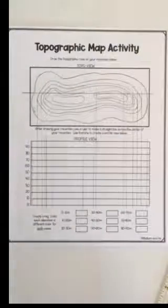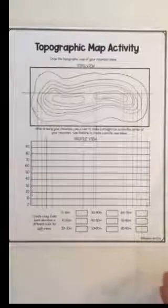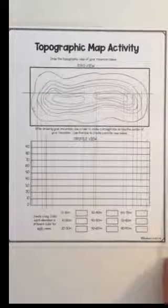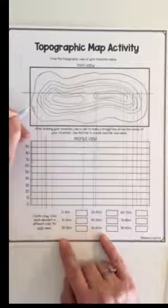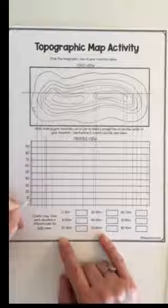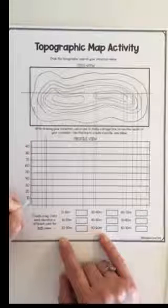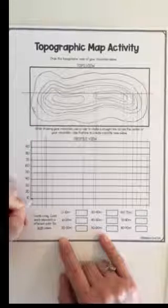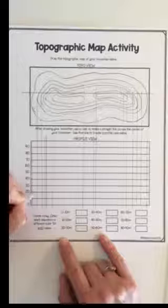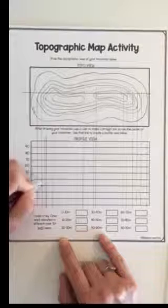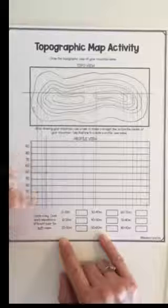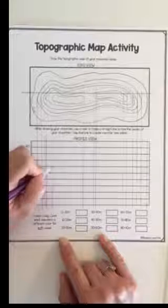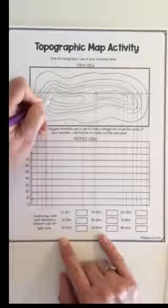Now that we've drawn our perpendicular lines I'm going to show you how to plot the profile view. So let's say that our first contour line is 10 meters. Where this perpendicular line crosses the 10 we're going to plot that point. The next one is 20, 30, 40, 50, 60 and we can see that this comes up to our first peak.